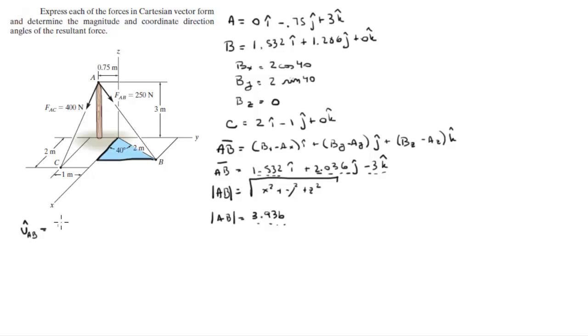So it's going to be x over AB i plus y over AB j plus z over AB k and when you do you're going to get these values.